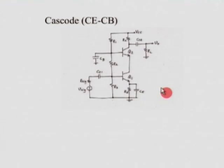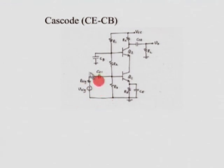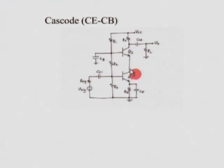Let us think of the scenario we just talked about — the cascode amplifier, which is a cascade of a common emitter stage followed by a common base stage. This is a typical diagram with biasing. What we have here: you have the input coming in at this side. The first stage is our familiar common emitter stage. The collector, instead of a load here, is actually feeding to the emitter of the second transistor.